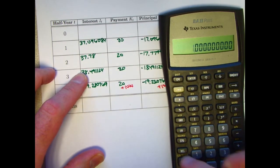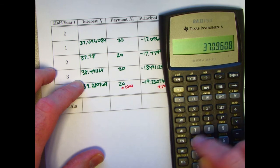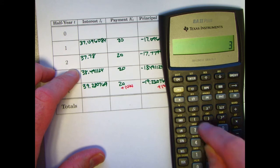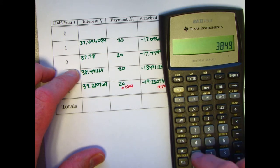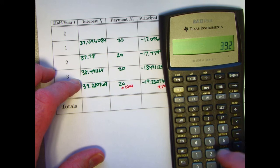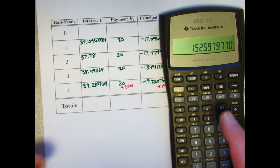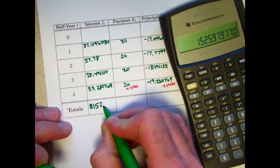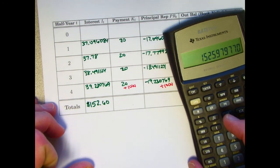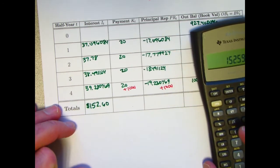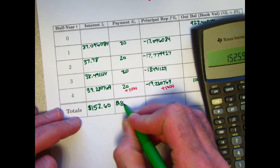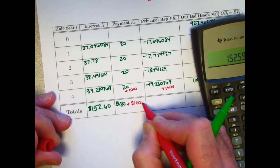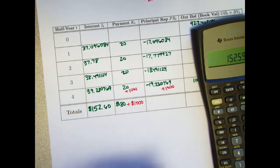You get the redemption amount, which is the par value or face value of 1,000. And that is a positive quantity. I would want to write it as a positive quantity. And now I can do all the totals. And this would go down to 0, by the way. Let's do the totals too. Interest column, 37.096084 plus 37.78.